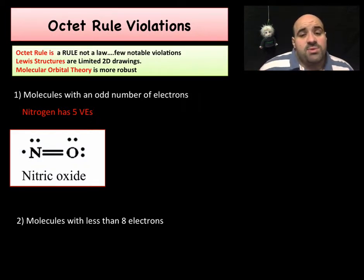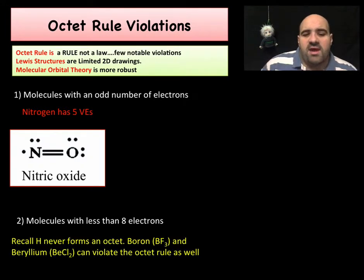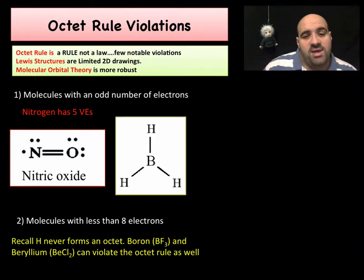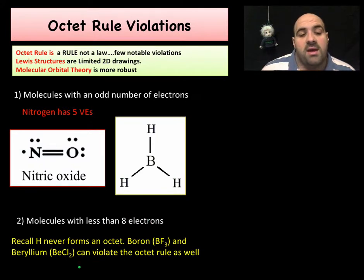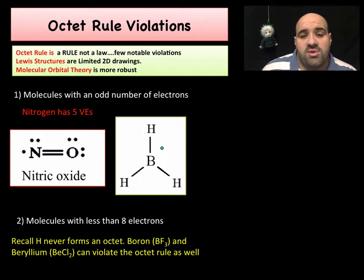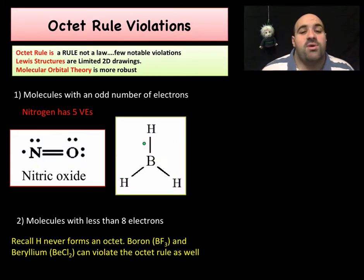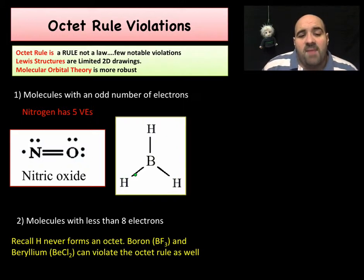Other cases: we have molecules with less than eight electrons. We already know that hydrogen doesn't form an octet — hydrogen only has two. And the same thing can happen with boron and beryllium. Boron fluoride, beryllium chloride — think about it. Boron has three valence electrons, hydrogen has one each, there are six total valence electrons. How could you ever get an octet? You can never get eight electrons when you only have six total in this molecule to begin with. So sometimes molecules have less than eight electrons and we don't get an octet.